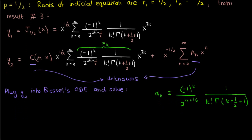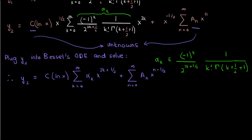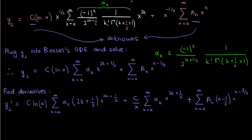With alpha sub k defined, y2 takes a simplified form. The first derivative of y2 can be found by using the product rule on the first summation term: ln x times the derivative of the summation plus the derivative of ln x times the summation. The rest of the derivative is found by simply differentiating the second summation term. We can simplify this first derivative by moving the 1 over x inside the summation to get a more manageable expression.